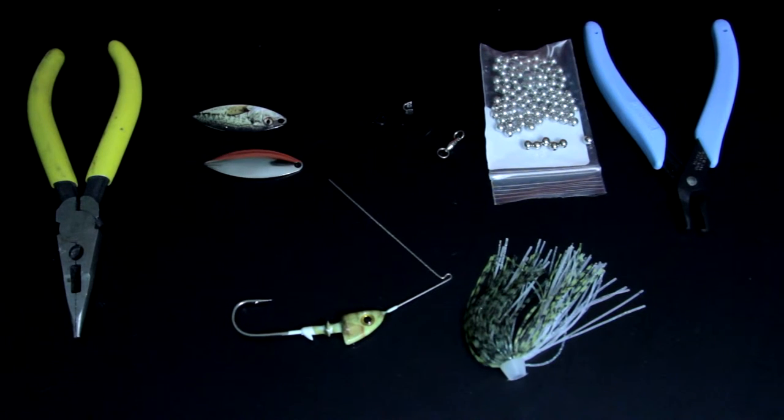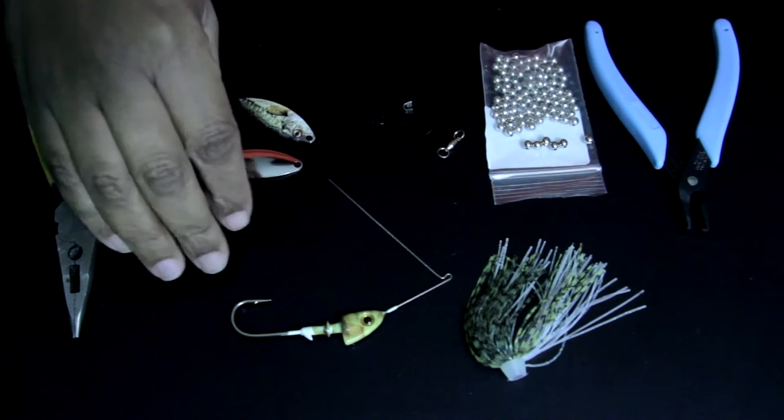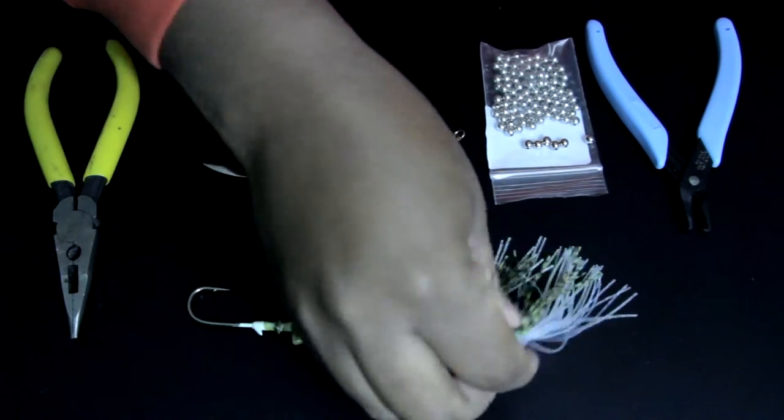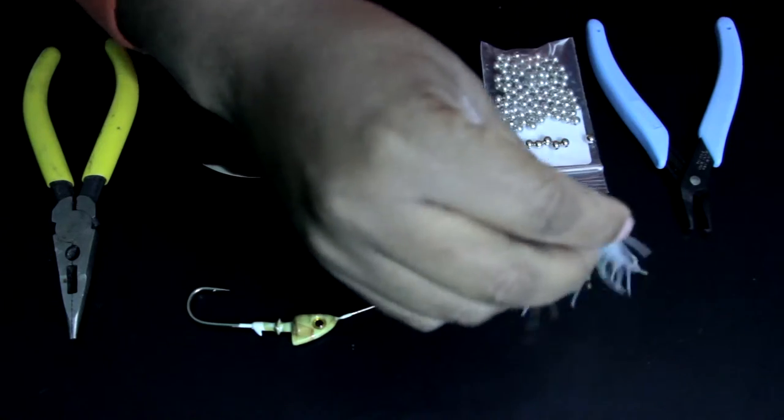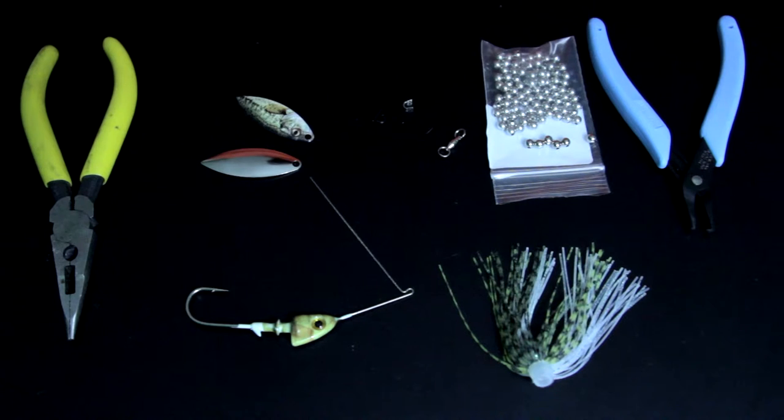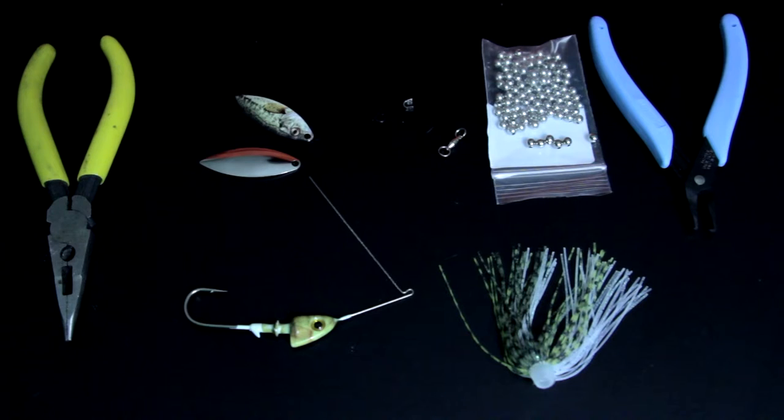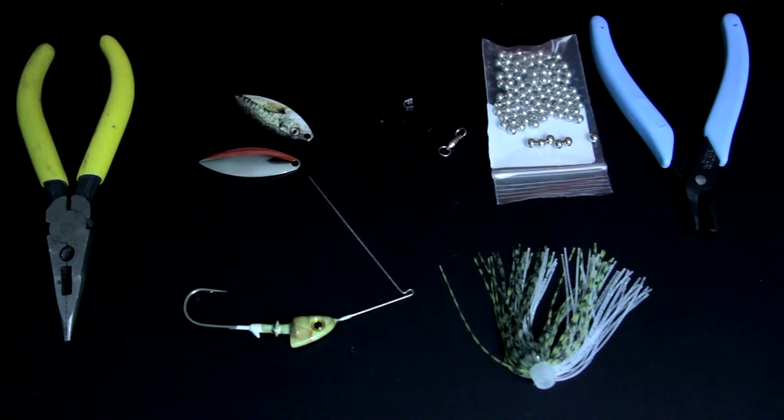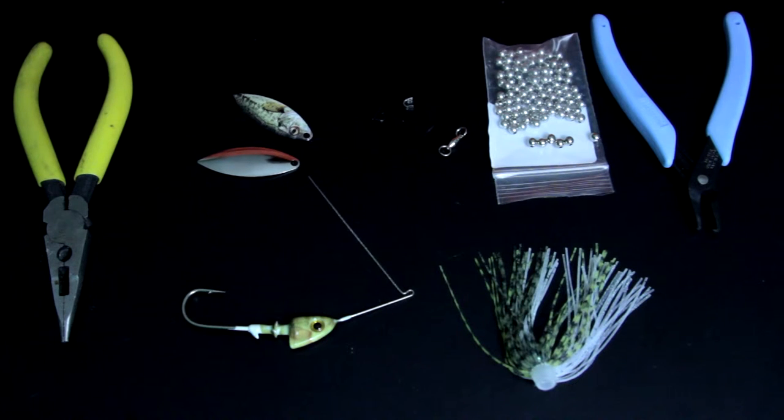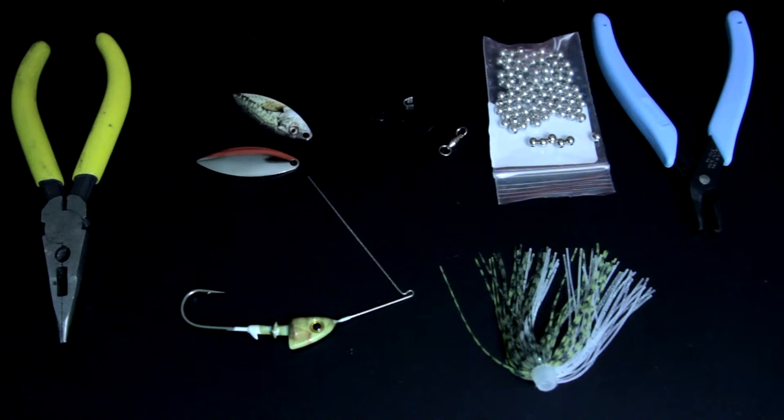When you're making your own spinner baits, you're not actually manufacturing your willow blades and spinner heads. You can make your own skirts if you want to, but what I like to do is buy parts off of lurepartsonline.com because if you go to a store and buy like a KVD spinner bait, that's gonna cost you like eight or nine dollars. You can make a spinner bait with just as good quality if you buy the parts yourself.